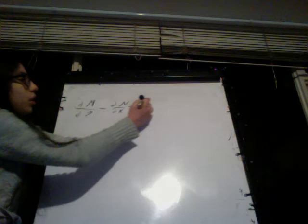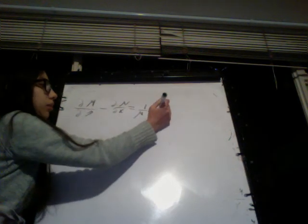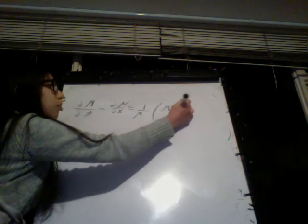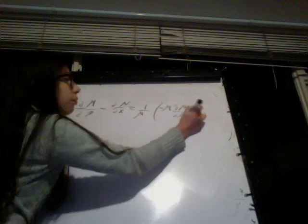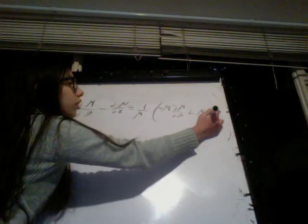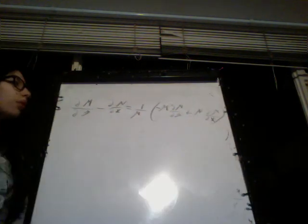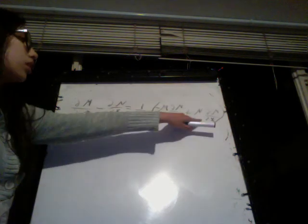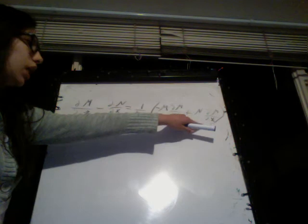We have mu in the next step: the partial derivative of M with respect to y minus the partial derivative of N with respect to x equals 1 over mu times M times the partial derivative of mu in dy, plus N times the partial derivative of mu in dx. If now mu only depends on y, then the partial derivative of mu with respect to x would be 0.